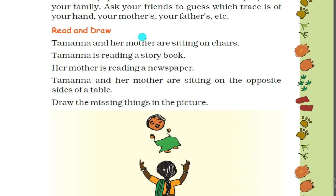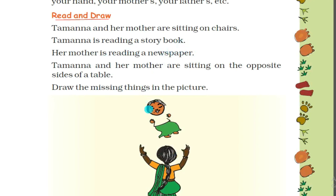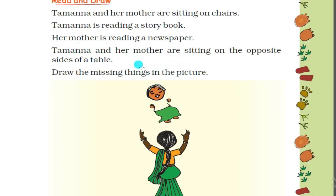Next is 'Read and Draw'. Tamanna and her mother are sitting on chairs. Tamanna is reading a story book, her mother is reading a newspaper. Tamanna and her mother are sitting on the opposite sides of a table.